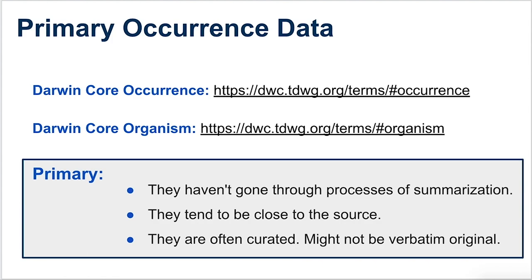We need to understand what we mean by 'primary' occurrence data. It means the data hasn't gone through some kind of summarization process — we're not looking at a checklist of species in a national park. Another characteristic is that they tend to be close to the source that generated them. That doesn't mean they're completely raw or handwritten in field notebooks, because they're often curated in museums or in large datasets, and having been digitized, they might not be the verbatim original either.